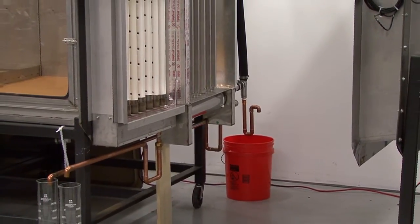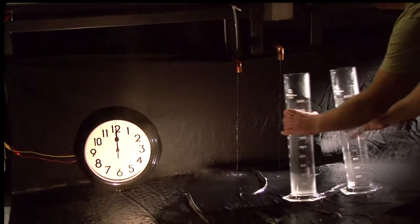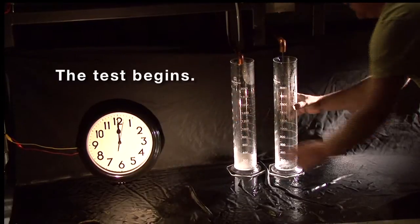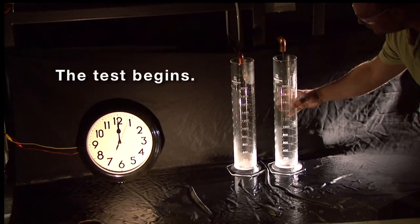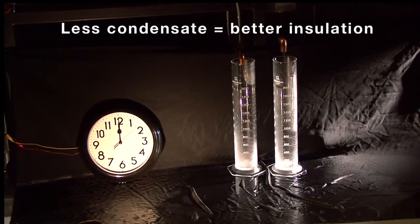To determine which insulation technology performs better, we are collecting condensate produced by each dispersion assembly in graduated cylinders for measurement. The cylinder on the left is collecting condensate from the dispersion assembly with stainless steel shielded air gap insulation. The cylinder on the right is collecting condensate from the dispersion assembly with PVDF insulation.